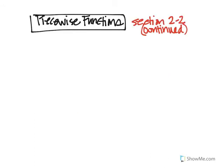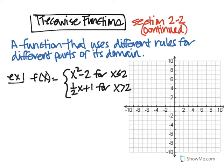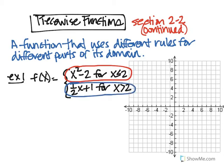We're going to continue with section 2-2, and this time we're going to talk about piecewise functions. A piecewise function is a function that uses different rules for different parts of its domain. For example, f of x equals x squared minus 2 for x values less than or equal to 2 — that's the first piece — and one half x plus 1 for x values greater than 2. So this piecewise function has two pieces.